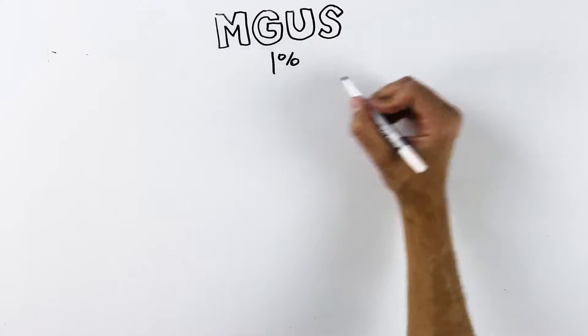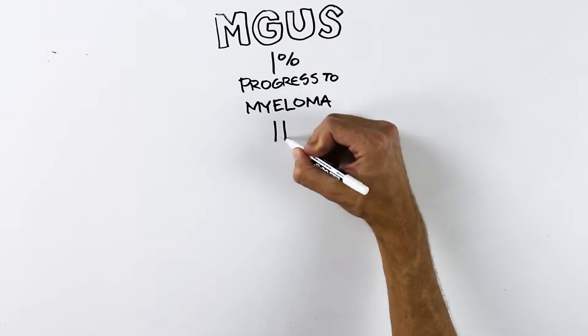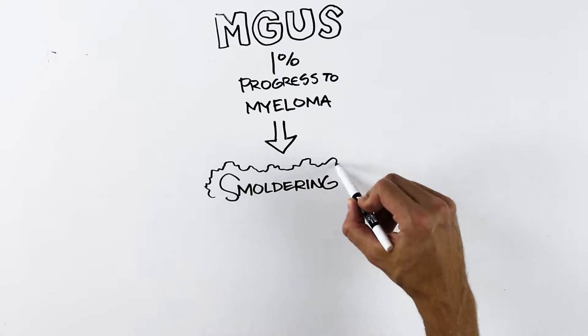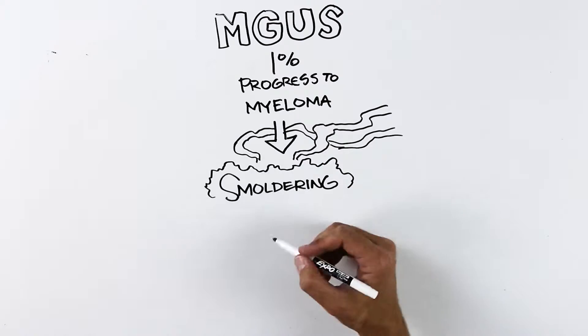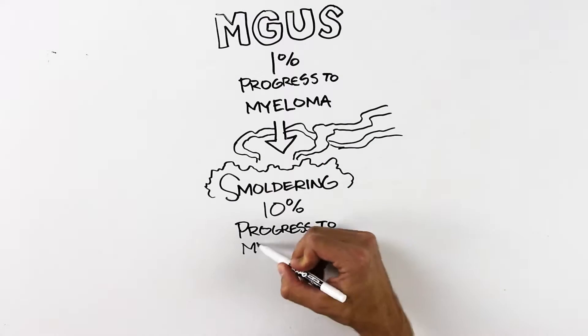People can have precursor stages of multiple myeloma and not even know it. Patients can start with a condition called MGUS or smoldering myeloma. These are early stages of the disease.